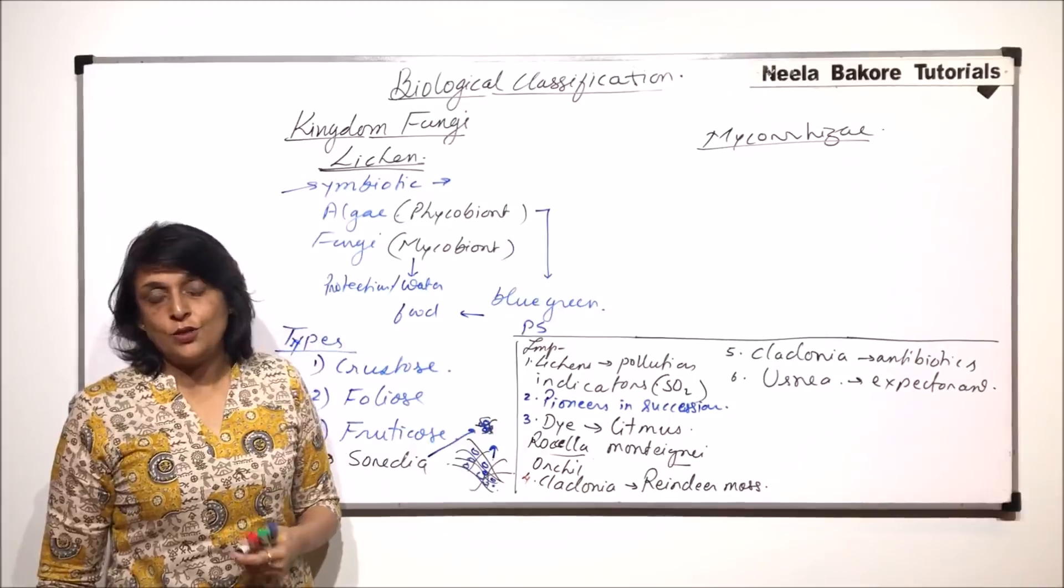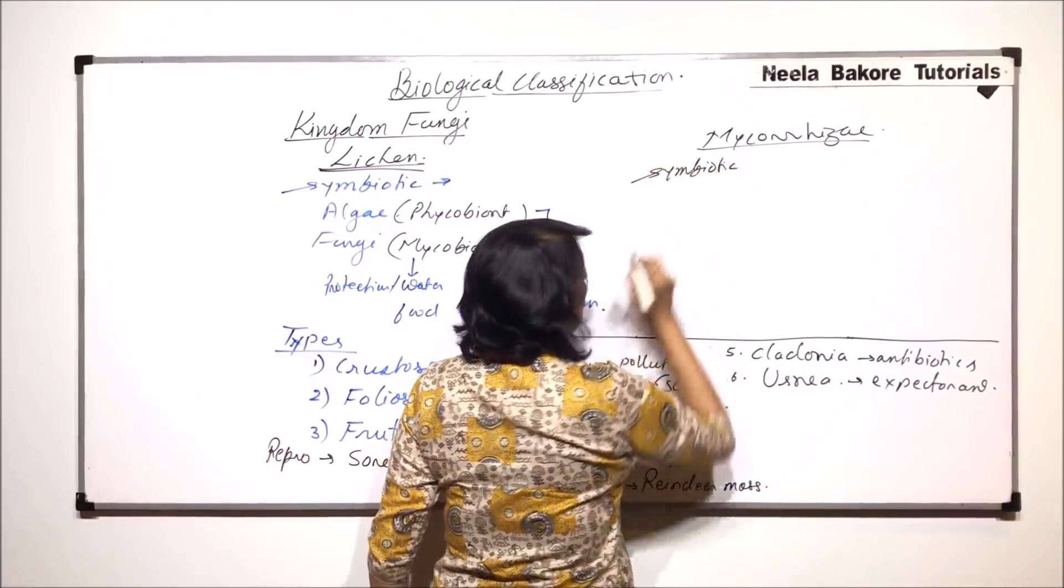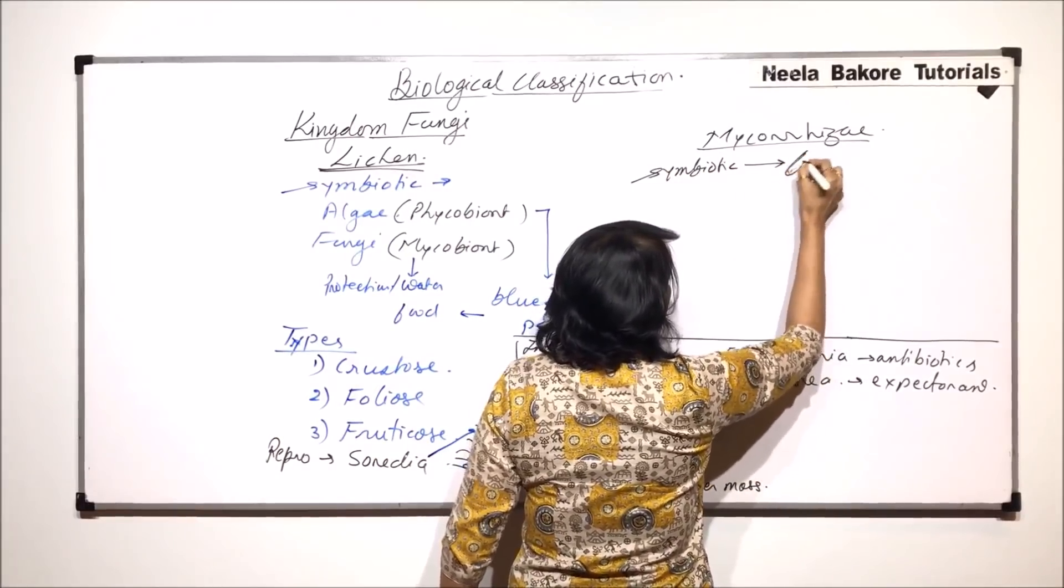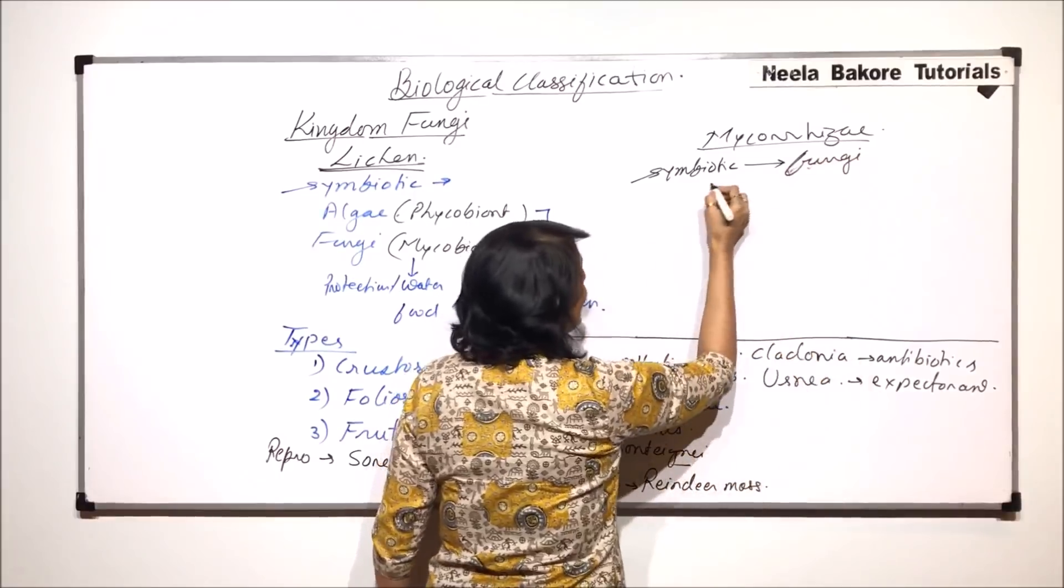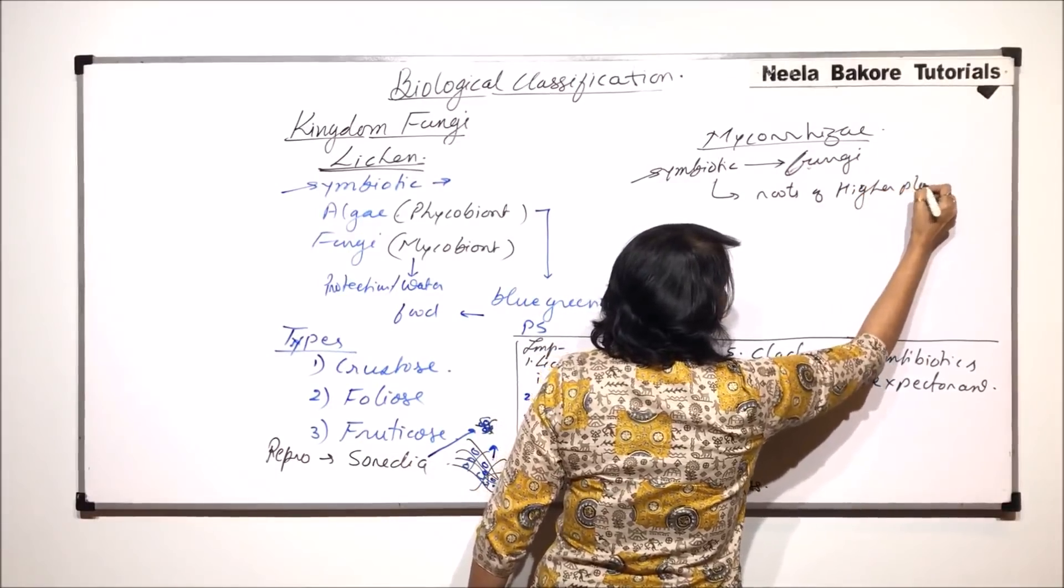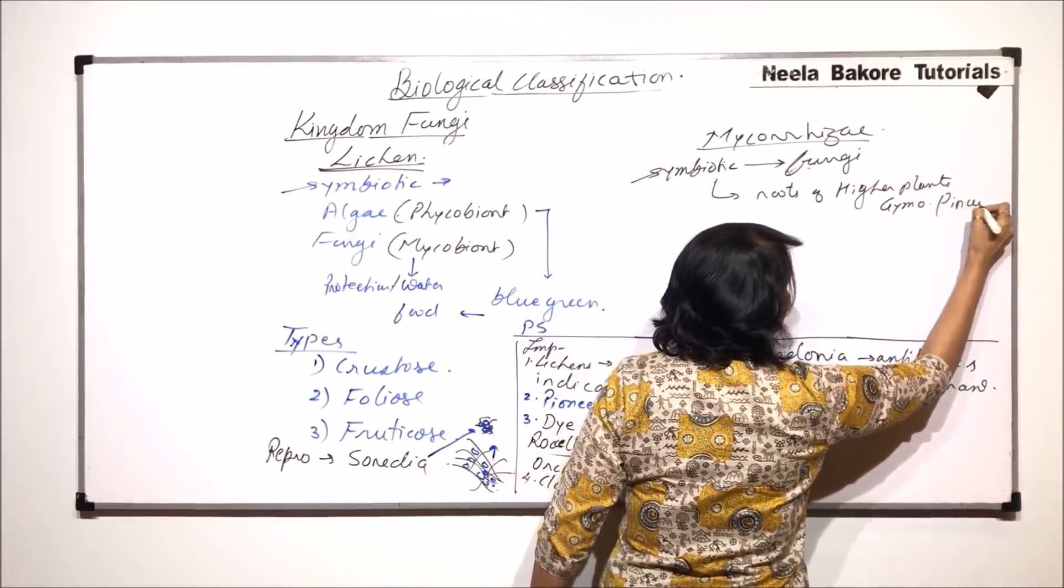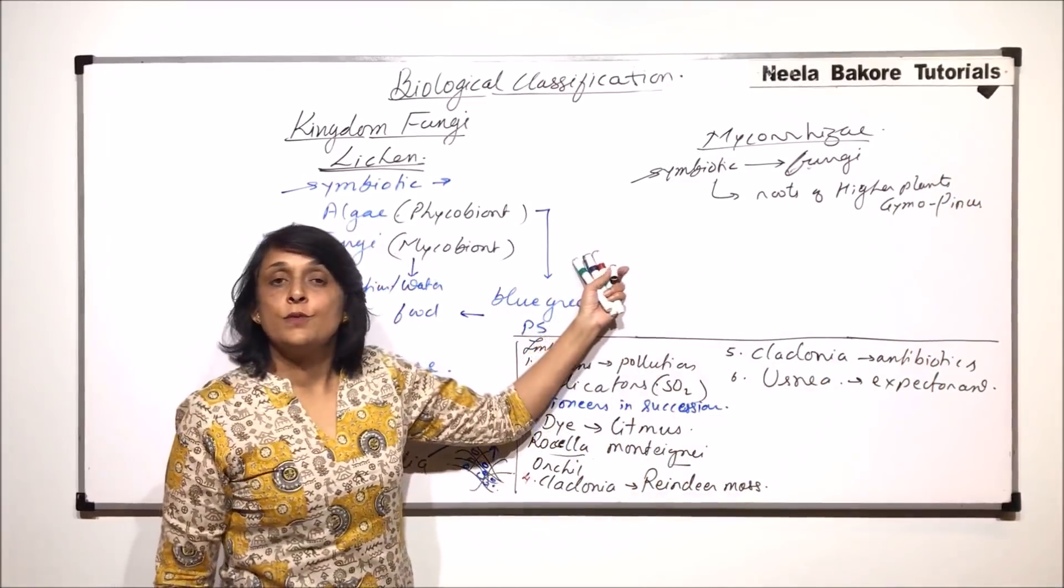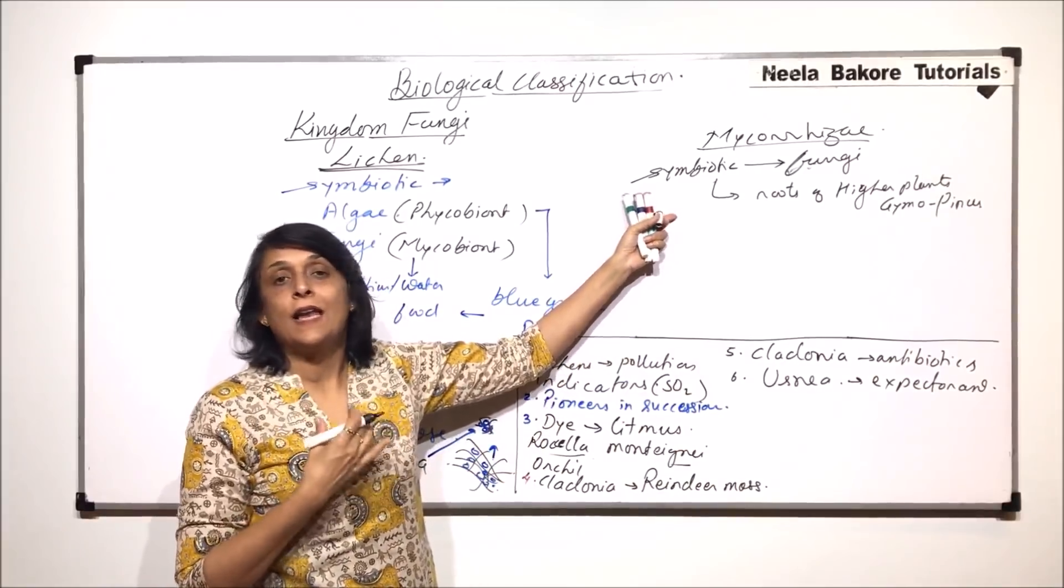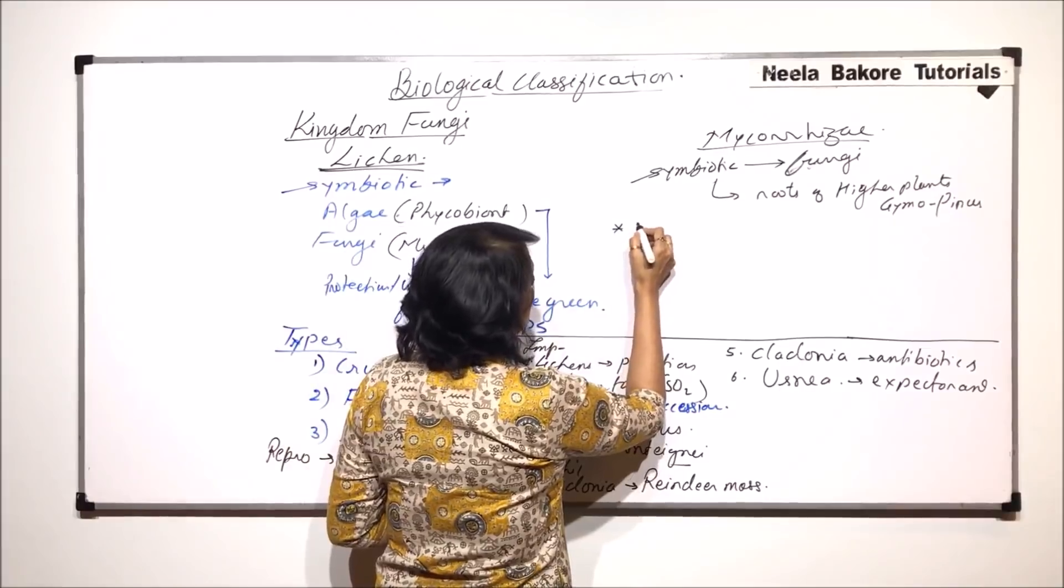Now, coming to another symbiotic association which is called mycorrhizae. This is also symbiotic, meaning both partners are going to get benefited. These partners are fungal hyphae and the roots of higher plants. There is a symbiotic association between fungal hyphae and the roots. On the basis of the location of fungal hyphae, mycorrhizae can be of two types.